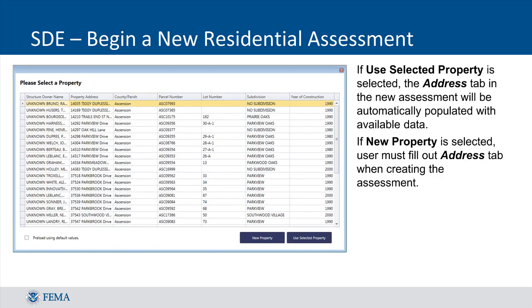If property records have been imported, you will see a list of all residential property records in the SDE database. You should select the property record that matches the structure you are assessing and click Use Selected Property. If you want to create a new property record for the assessment, then you should click New Property. This screen also offers you the option to preload the assessment with default values if you have entered default values in SDE.